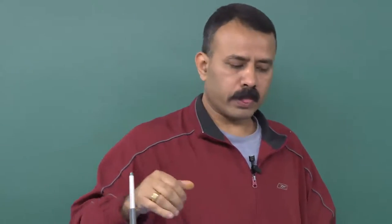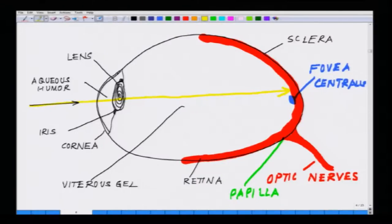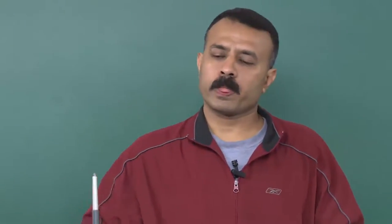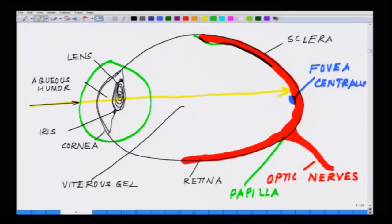This is the overall structure of the eye — it is slightly more spherical but I am drawing it simply. If you see from the front and follow the path of light, the yellow arrow shows light traveling through. The region circled in green is where the amount of light passing is controlled, and image processing takes place in this region at the back.